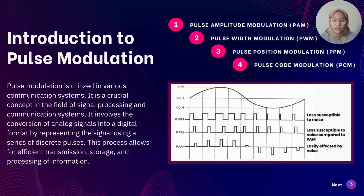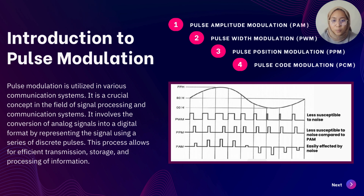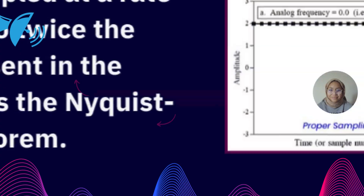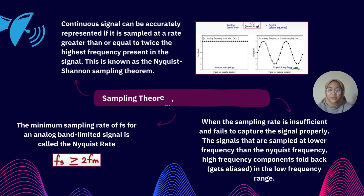Here are the types of pulse modulation: we have Pulse Width Modulation (PWM), Pulse Position Modulation (PPM), and Pulse Amplitude Modulation (PAM). The key differences are that PWM is less susceptible to noise, PPM is less sensitive to noise compared to PAM, while PAM is easily affected by noise.